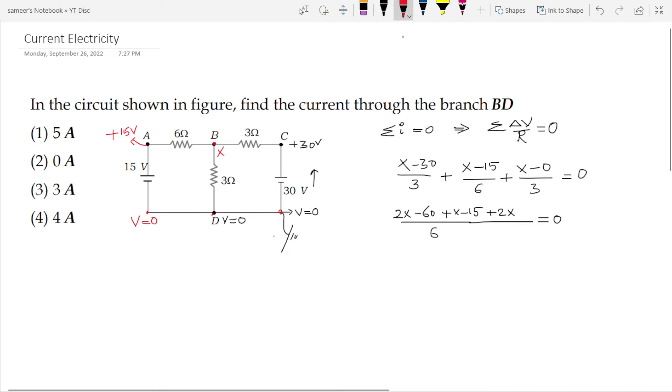You have 2x here and x here and there is 2x, it all becomes 5x. 5x minus 75 becomes 0.